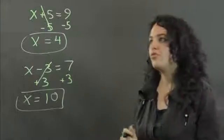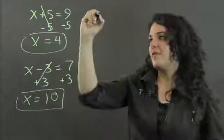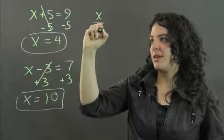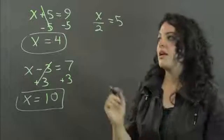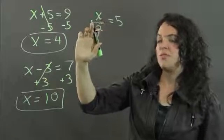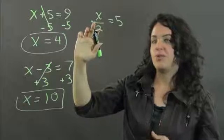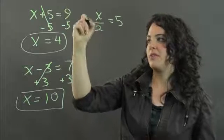I'm going to give you two more quick ones. If I have x divided by 2 equals 5, x is being divided by 2. The inverse of division is multiplication. So I'm going to multiply both sides by 2.